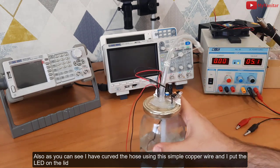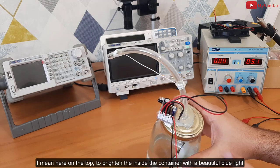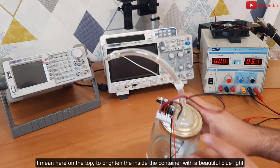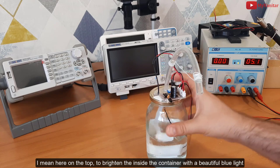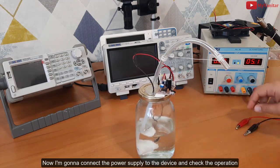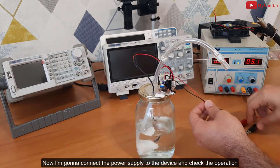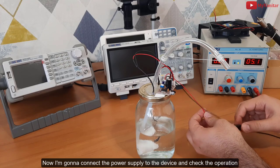Also as you can see, I have curved the hose using this simple copper wire and I put the LED on the lid, I mean here on the top, to brighten the inside the container with the beautiful blue light. Now I'm going to connect the power supply to the device and check the operation.